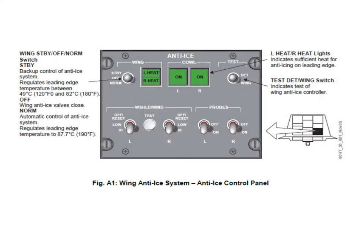Here is our anti-ice control panel, which is part of the overhead panel. On the bottom row you have left and right windscreen heating control switches with an off/reset position, a low, and a high position. You have left and right probe switches - on or off - and when in the on position, they don't necessarily come on immediately because there's certain logic which we'll go through later.